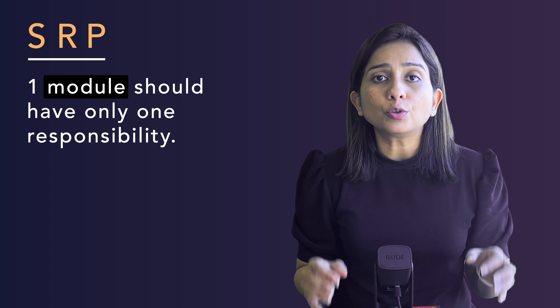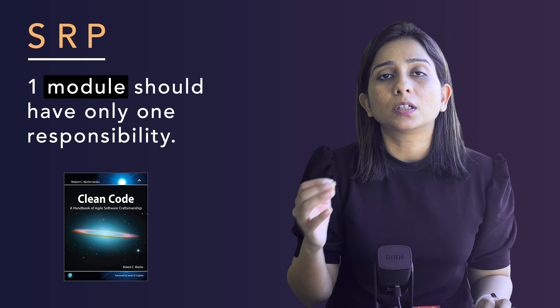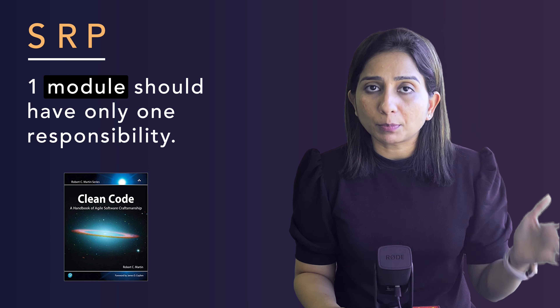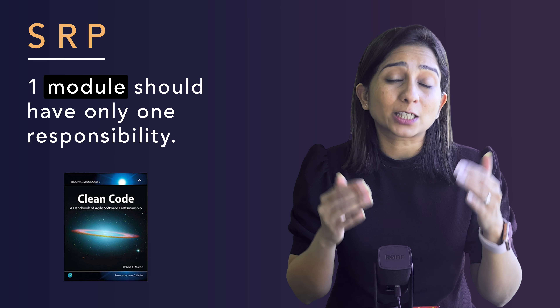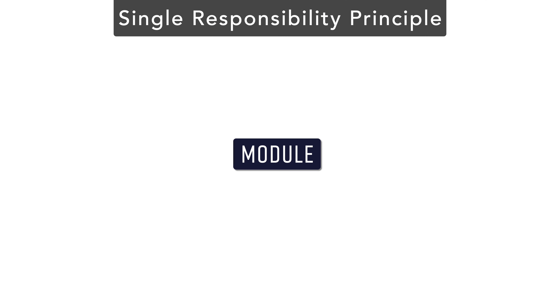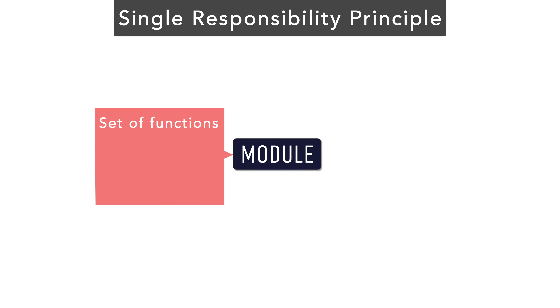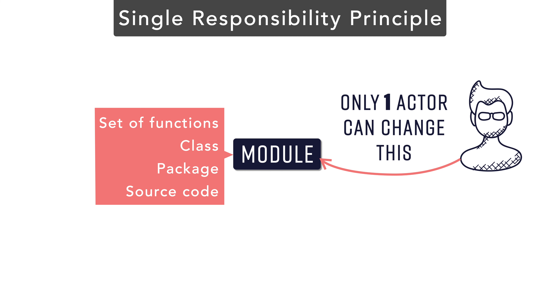In fact, even I used to think like that, but on further digging I found this book by Uncle Bob called Clean Code. I'm going to use the same example from his book that explains the Single Responsibility Principle. The principle actually states that any module — a set of functions, a class, a package, or a source file — should have a reason to change by only one actor, or the whole functionality should be changeable by only one actor.